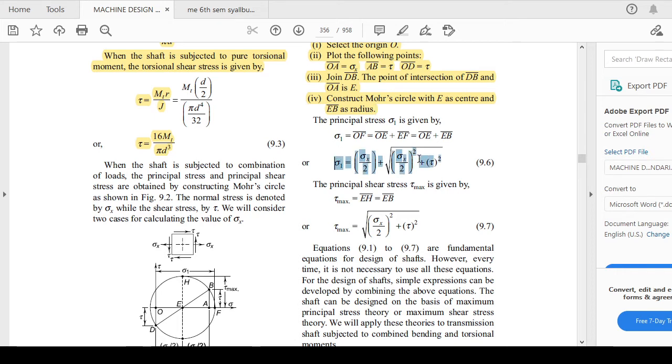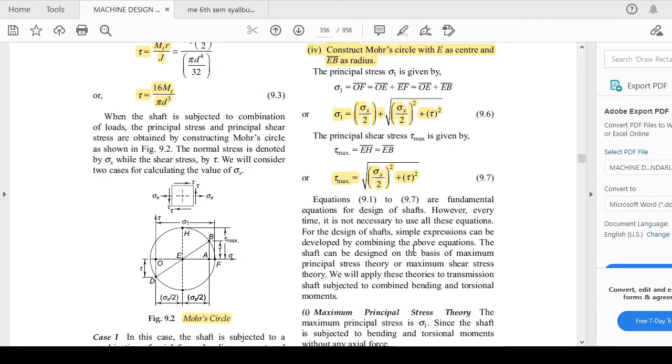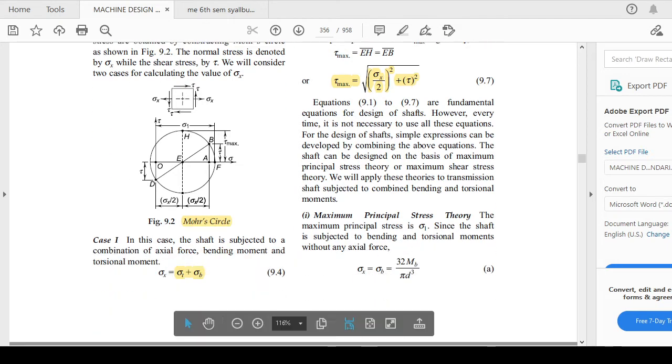Now your principal stress will be calculated as σ_b = σ_x/2 + √((σ_x/2)² + τ²). Similarly, you can calculate the τ_max value, which is the maximum torsional shear stress. In this way you can calculate, and after that you can also apply some principal stress theories or theory of failures.